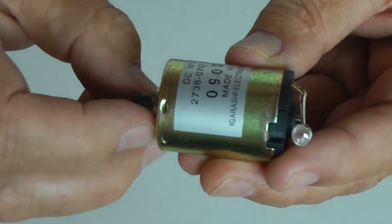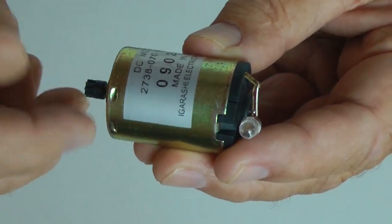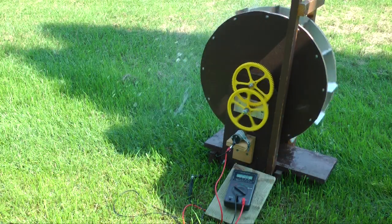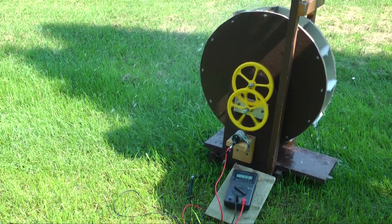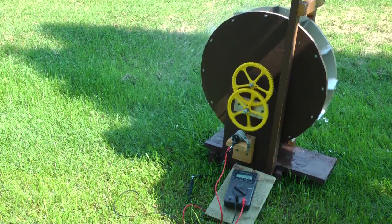Small DC motors make excellent generators for projects demonstrating the creation of electrical energy from wind or water. This is a model water wheel. When falling water rotates the wheel, electricity is produced by the small generator.